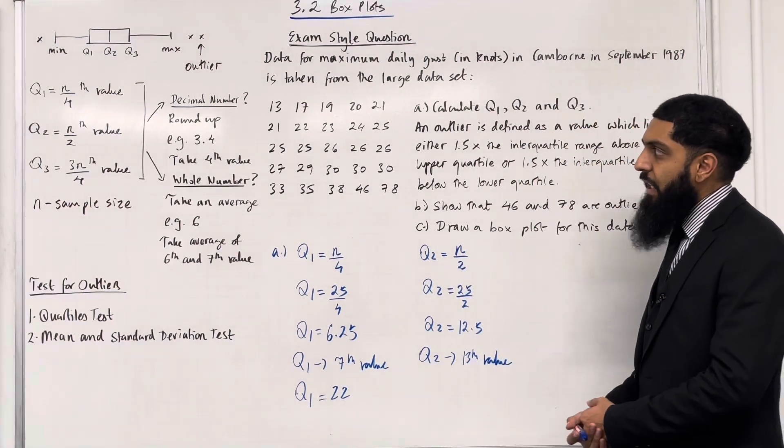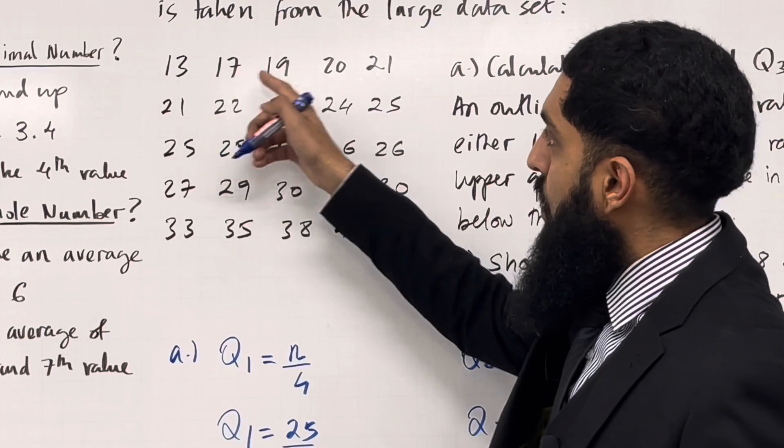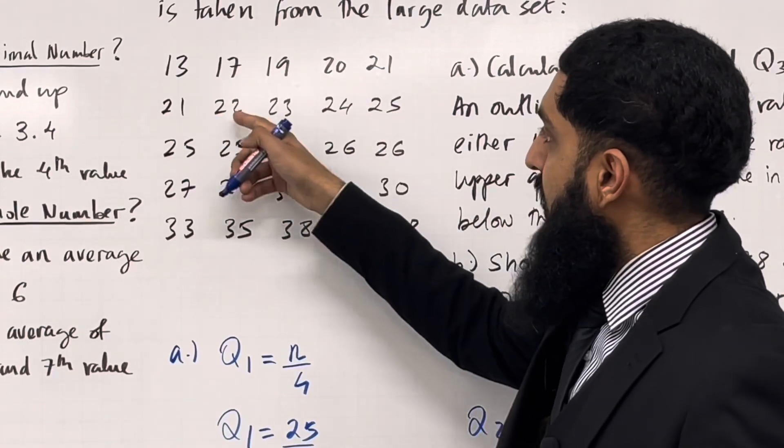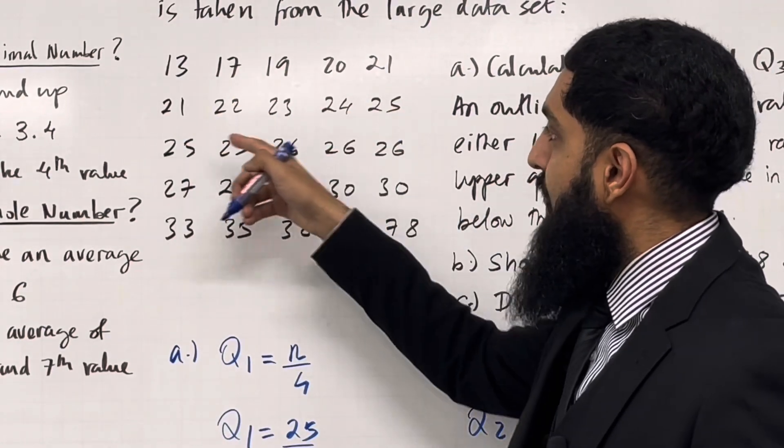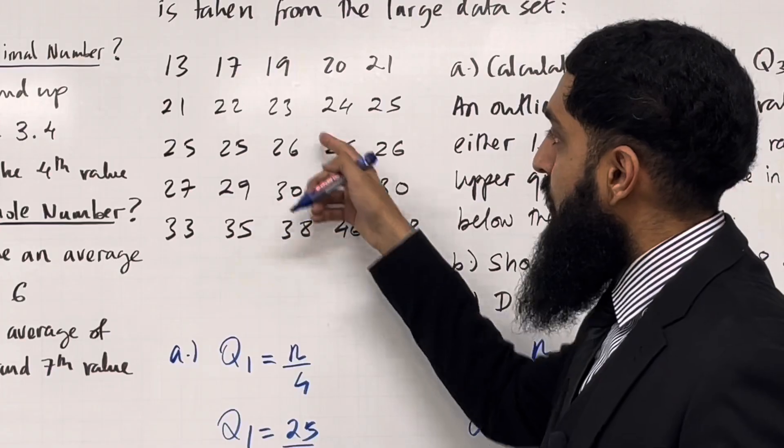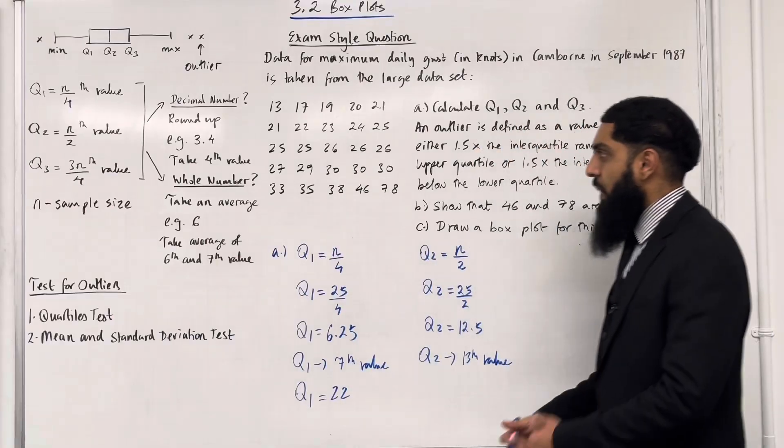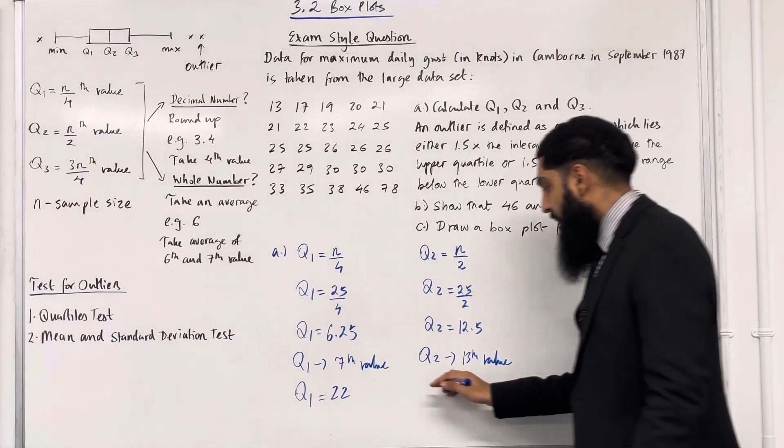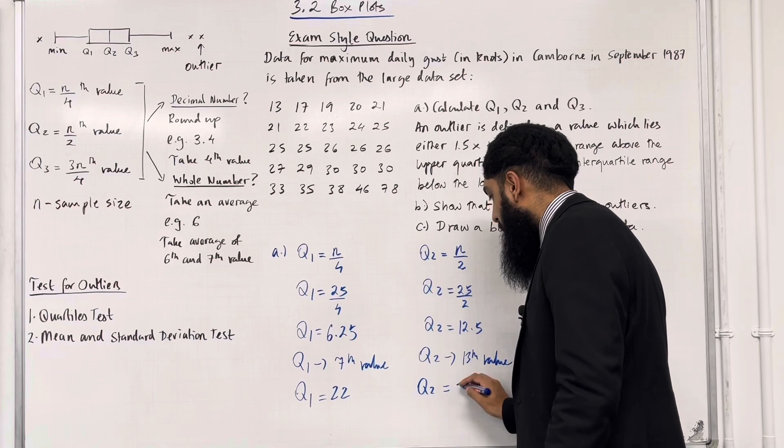Going back to my data values and counting to the 13th value, the 13th data value is 26. Hence the median Q2 equals 26.